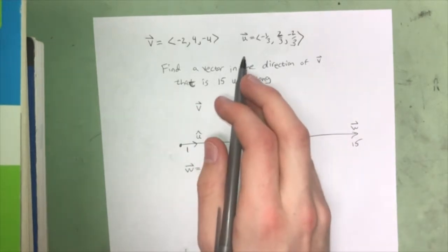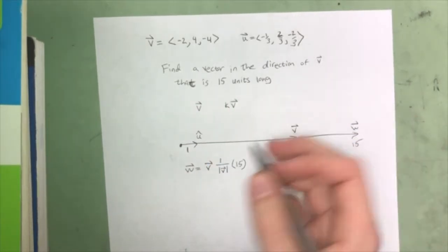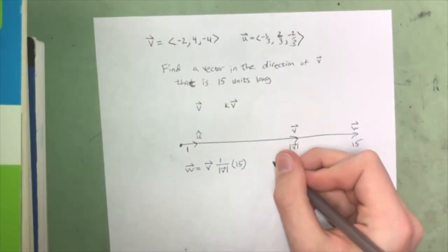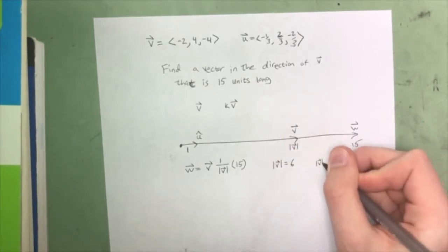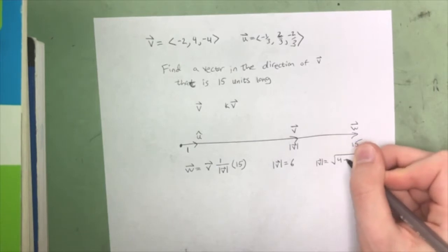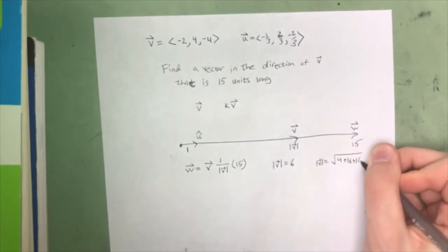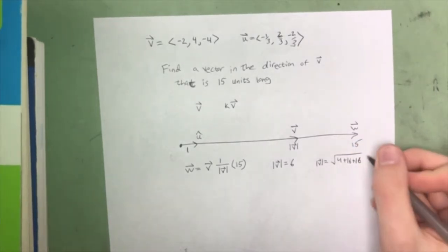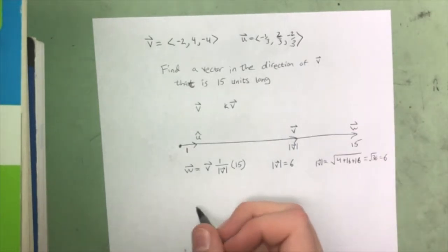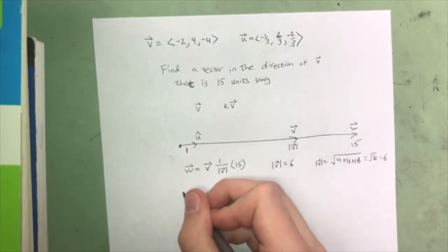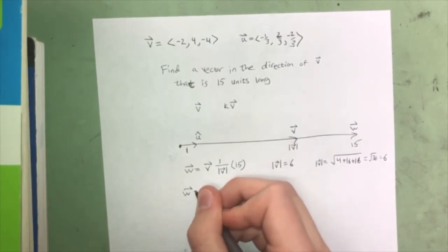And so when we found our unit vector, we found that the magnitude of v equaled 6, because the magnitude of v equaled the square root of 4 plus 16 plus 16 plus 16, which is the square root of 36, which is 6. And so to find w, what this is going to be is w is